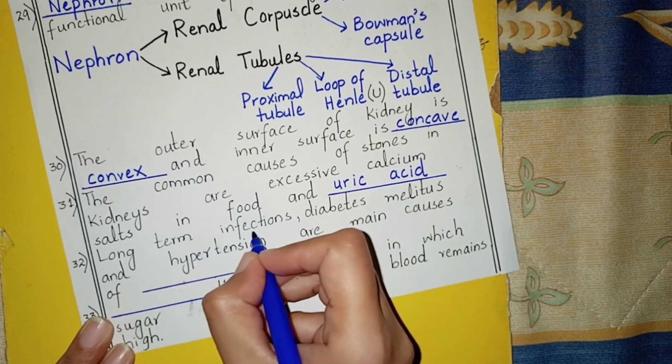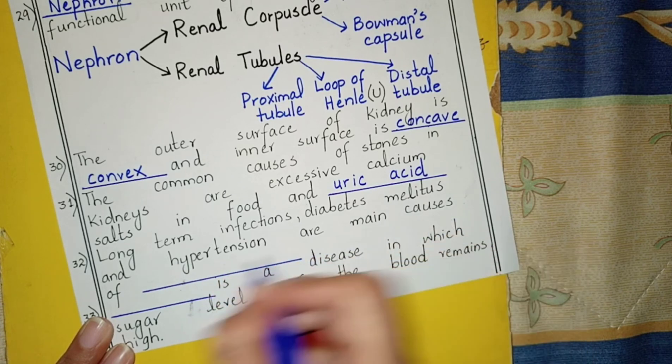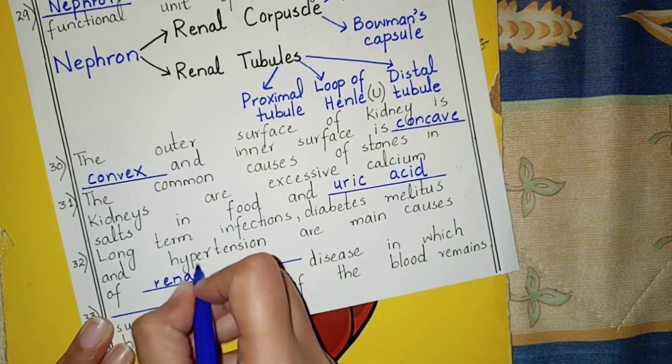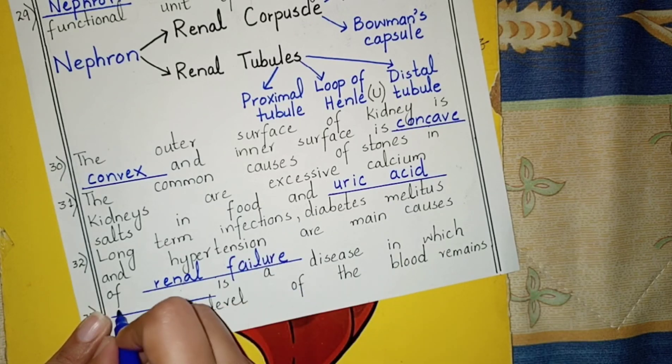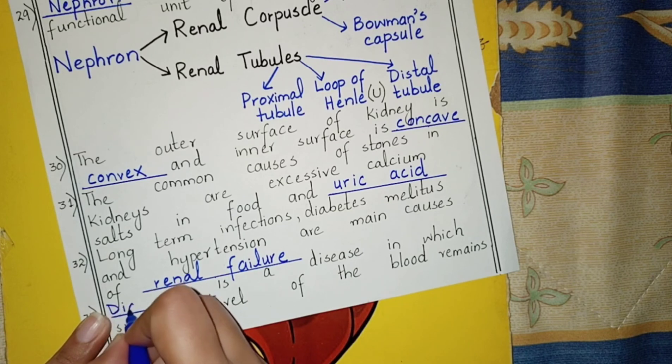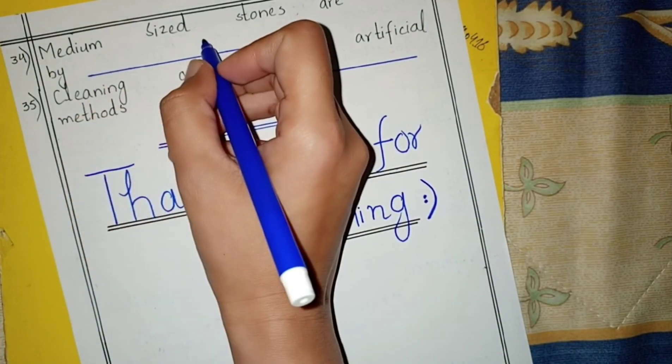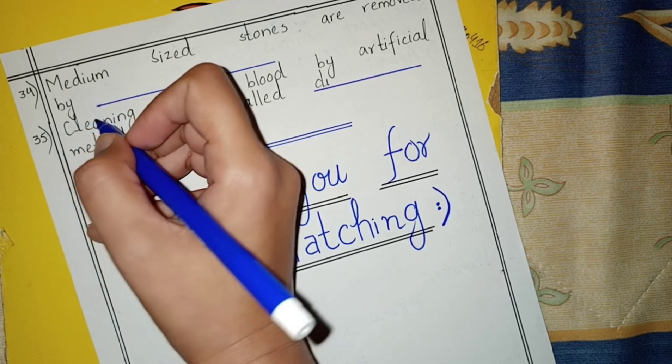Long-term infections, diabetes mellitus, and hypertension are main causes of renal failure. Diabetes mellitus is a disease in which the sugar level of blood remains high.